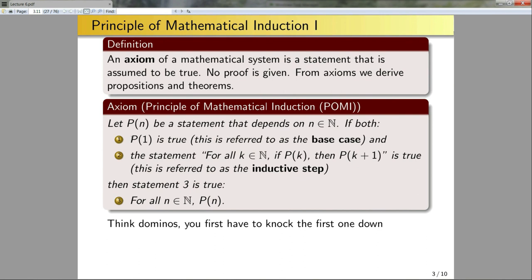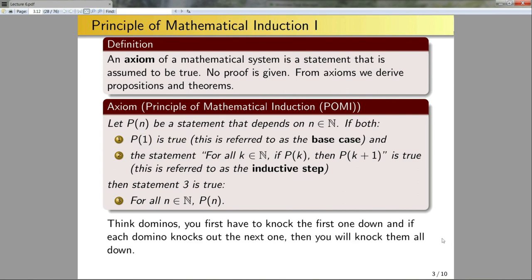So for dominoes: first knock the first one down, and if each domino knocks down the next, then all of them will fall. The reason we need to take this as an axiom is that if we had a finite number of dominoes it's obviously true, but with an infinite amount of dominoes, to guarantee it works no matter how far down the chain you go, we really need to take it as an axiom.